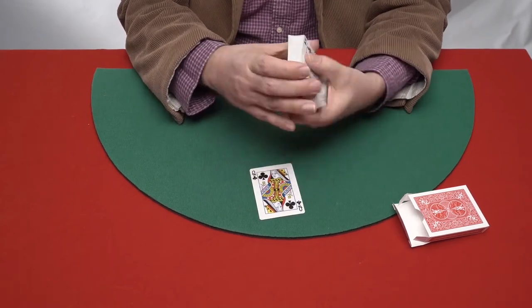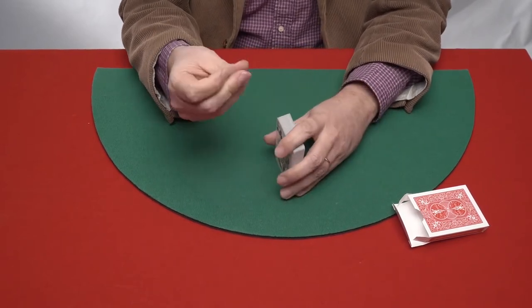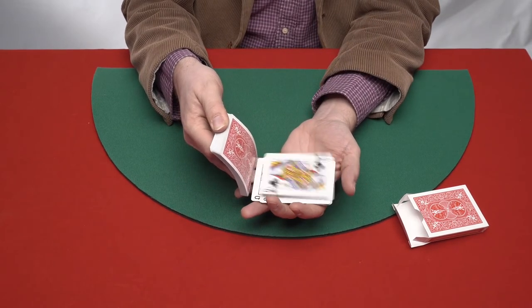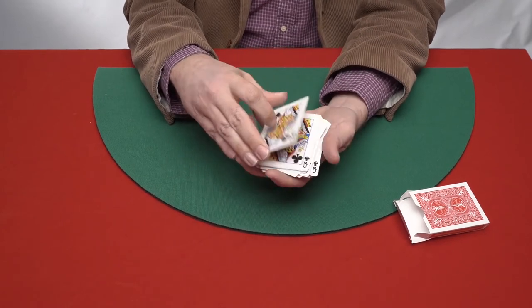But I can go further. If I take your card and put it on the deck like this and snap my fingers, all I have to do is run through them and all the cards, every single card of the deck becomes the queen of clubs, the card that you chose.